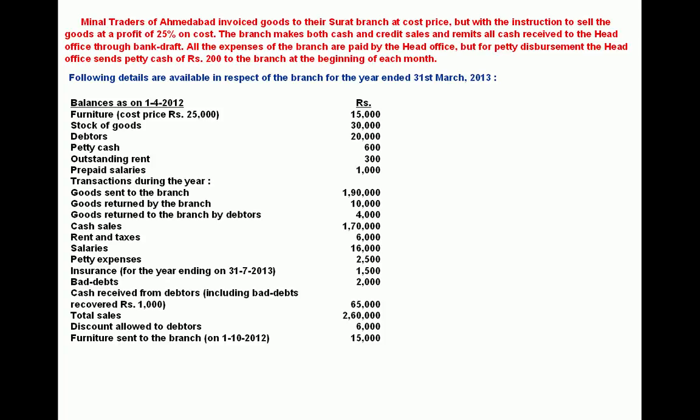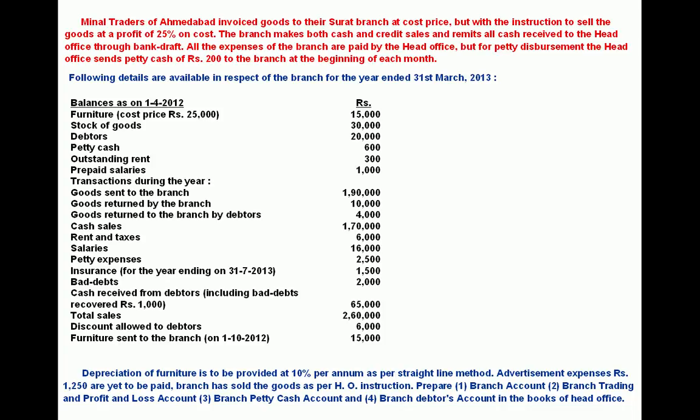In the debtors account working note, we record 64000, not 65000, but the remittance recorded in the branch account will be 65000 — comprising collection from debtors as well as bad debt recovered. Total sales minus cash sales gives credit sales. Discount allowed to debtors, furniture sent to the branch, and depreciation on furniture at 10% by straight line method (calculated on original cost) are also given. Advertisement expenses of rupees 1250 are yet to be paid.